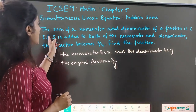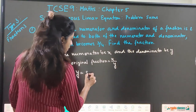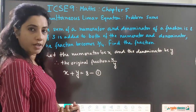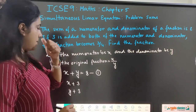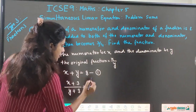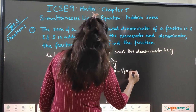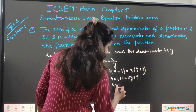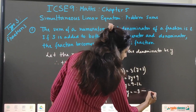Now we apply the conditions. The sum of the numerator x and denominator y equals 8 — this is the first equation. Second: if 3 is added to both the numerator and denominator, the fraction becomes 3 by 4, so (x+3)/(y+3) = 3/4. Cross multiplying gives 4(x+3) = 3(y+3), which becomes 4x + 12 = 3y + 9, or 4x − 3y = −3. This is the second equation.